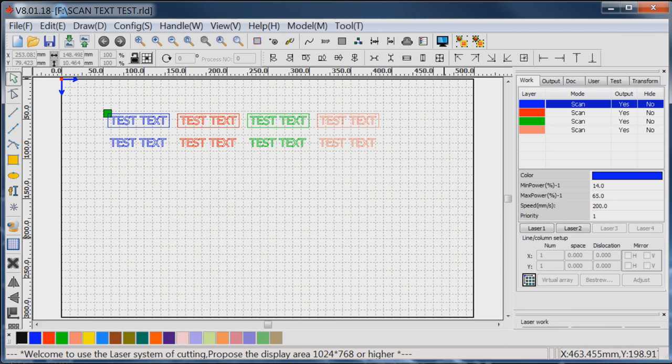What we've got on the screen is some test text, as it clearly says, and you'll notice that I've got different layers set up for the same thing.